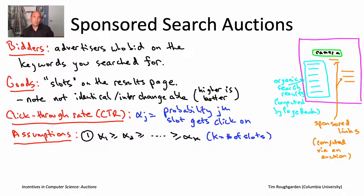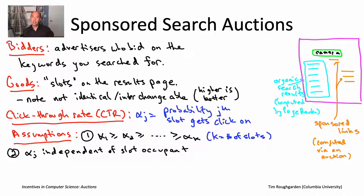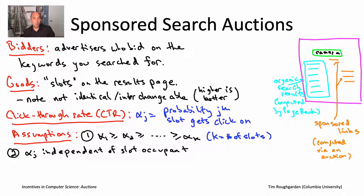The second assumption is really just to keep our discussion simple. For the purposes of this lecture, let's assume that the click-through rate of a slot is independent of the occupant — independent of which ad you actually display in that slot. This assumption is certainly not reasonable. Your propensity to click on a sponsored link doesn't just depend on its position; it also depends on the anchor text. But it's very easy to extend this model to accommodate advertiser-specific multipliers on the click-through rate — see the lecture notes at timroughgarden.org for more. For the purposes of this lecture, we'll continue with the assumption that the click-through rate depends only on position, not on the advertiser displayed there.